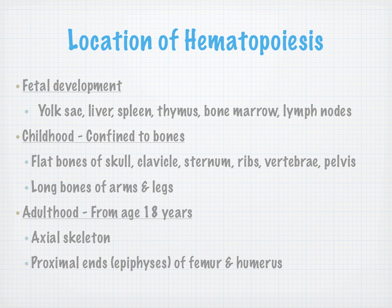In fetal development, the structures involved in hematopoiesis are the yolk sac, the liver, the spleen, the thymus, the bone marrow, and lymph nodes. In childhood, hematopoiesis is confined to bones — the flat bones of the skull, clavicle, sternum, ribs, vertebrae, pelvis, and long bones of arms and legs. In adulthood, from age 18 on, hematopoiesis comes from the axial skeleton and the proximal ends of the femur and the humerus — these are called the epiphyses.